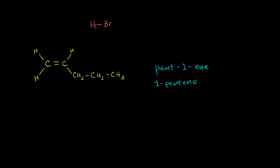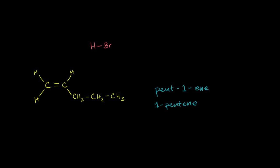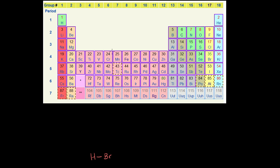Now the first thing we might look at is this hydrogen bromide. As you get more experience, you'll say bromine is much more electronegative than hydrogen — it likes to hog electrons much more. Electronegativity increases from the bottom left to the top right of the periodic table. That's just a fancy way of saying how much does an atom like to hog electrons? So for example, fluorine loves to hog electrons, and calcium doesn't like to hog electrons so much.